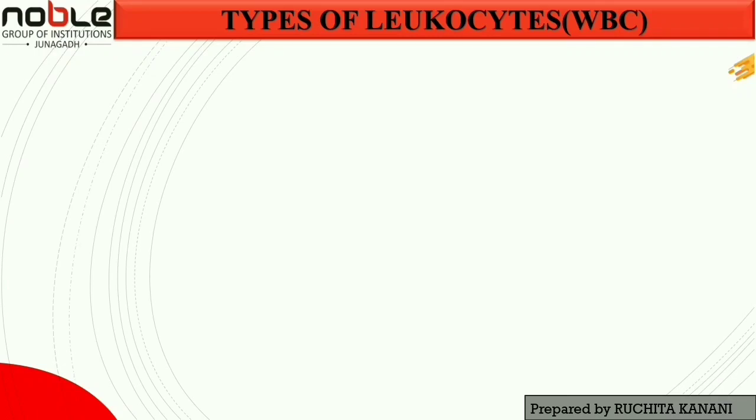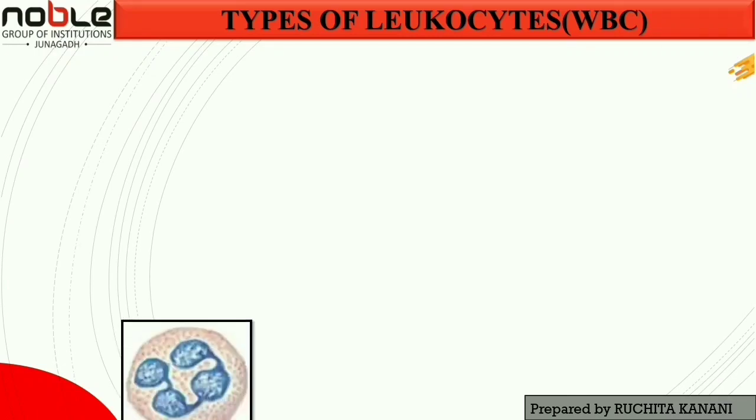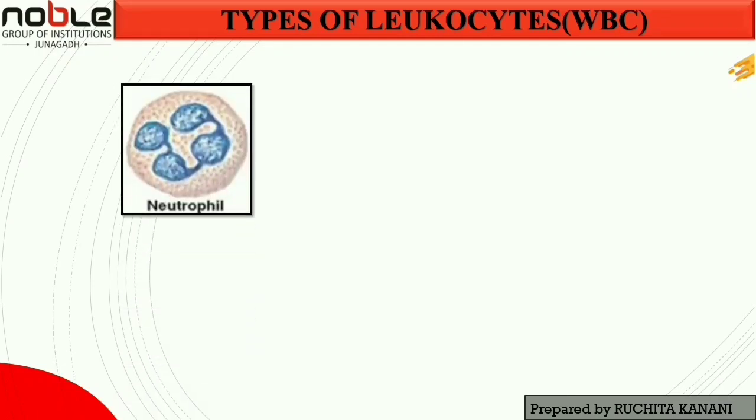The first type is neutrophil. Neutrophils are the most common white blood cell in normal adult blood. When stained with Fieldstain, they exhibit a multilobed nucleus. You can see the multilobed nucleus and the pink-colored cytoplasm that contains small purple granules.